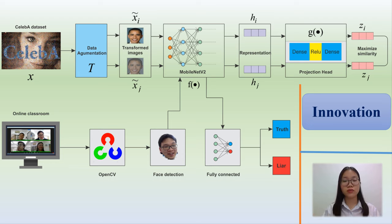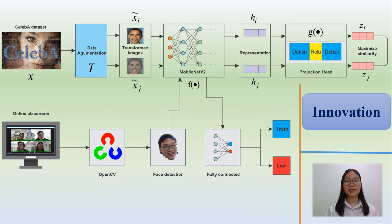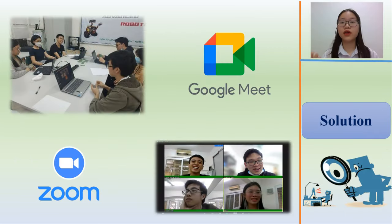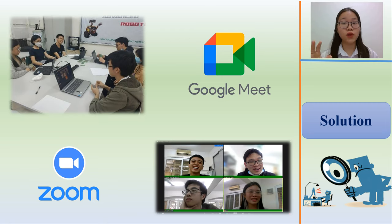Our lie-detection system performs two tests as shown in the figure. In the first, we improved the backbone model, and in the final, we used transfer learning for classification tasks. In an effort to detect dishonesty during online courses, we assembled records from digital devices like laptops and software such as Google Meet or Zoom Meeting.